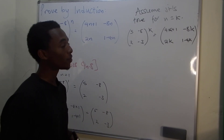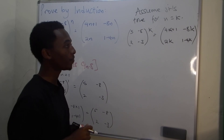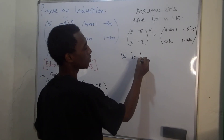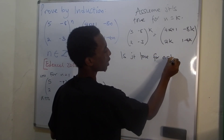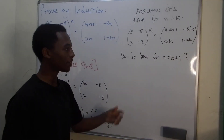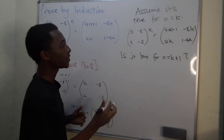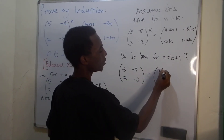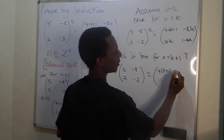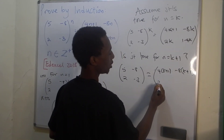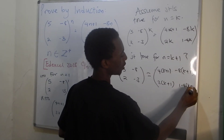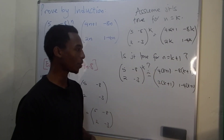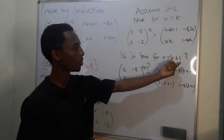Now the induction step. Assuming it's true for n equals k, we want to prove: is it true for n equals k plus 1? So the big question is, is [5, -8, 2, -3] to the power k+1 going to be equal to the matrix with entries 4(k+1)+1, -8(k+1), 2(k+1), and 1-4(k+1)? That's what we want to find out.